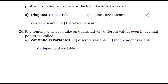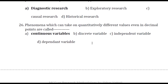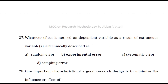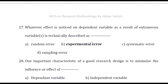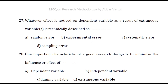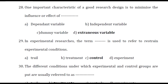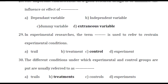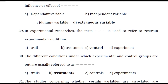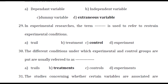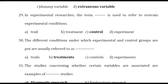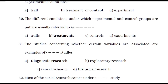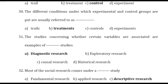Phenomena which can take on quantitatively different values even in decimal points are called continuous variables. Whatever effect is noticed on the dependent variable as a result of extraneous variables is technically described as experimental error. One important characteristic of a good research design is to minimize the influence or effect of extraneous variables. In experimental researches, the term control is used to refer to restraining experimental conditions. Studies concerning whether certain variables are associated are examples of diagnostic research studies.